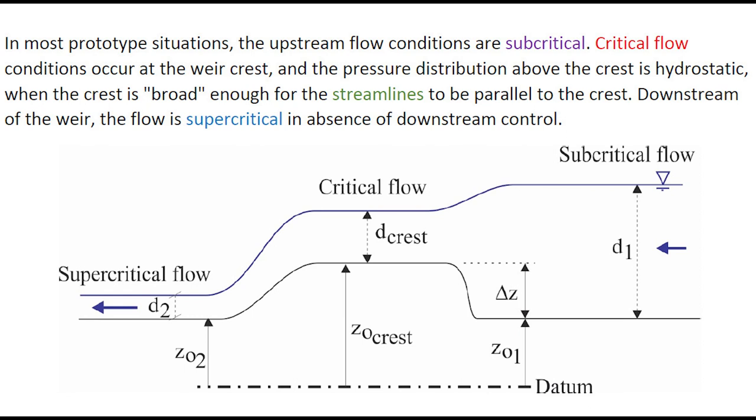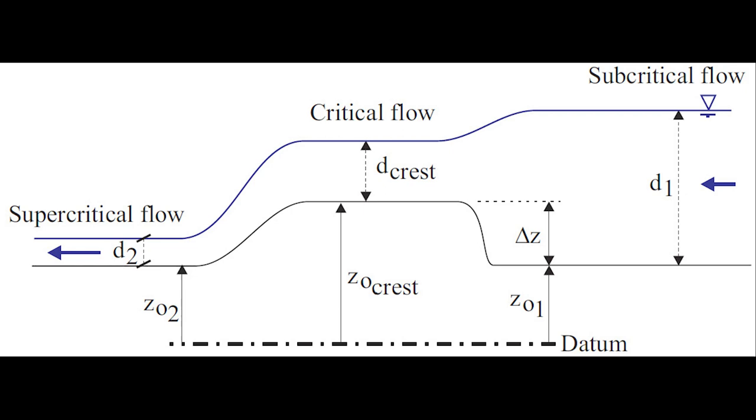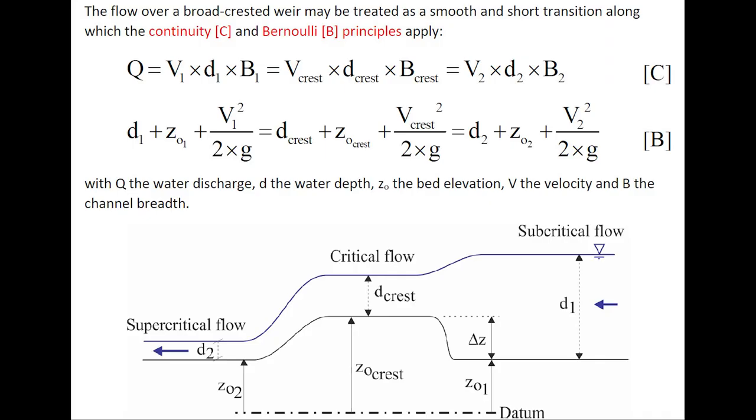Downstream of the weir, the flow is supercritical in absence of downstream control. The flow above a broad-crested weir may be treated as a smooth and short transition, along which the continuity and Bernoulli principle apply, as shown here.